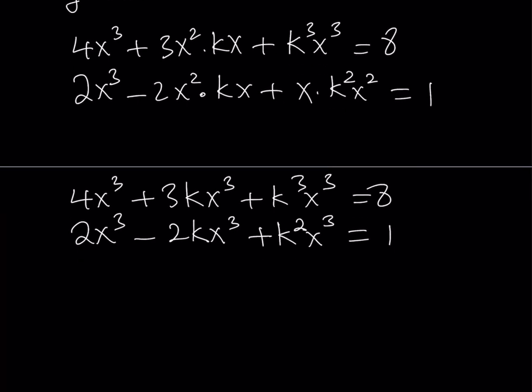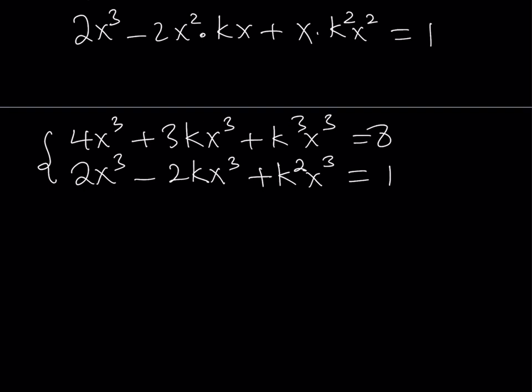Now how do you simplify this system? You can just go ahead and factor out the x³ from both of these equations. And write the first one as x³ times the quantity 4 plus 3k plus k³, which is equal to 8.